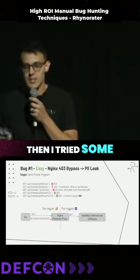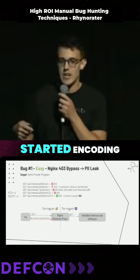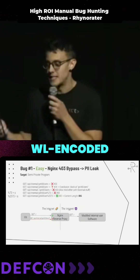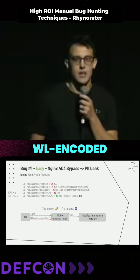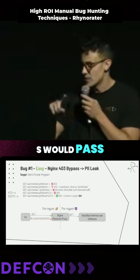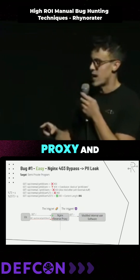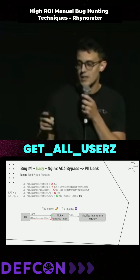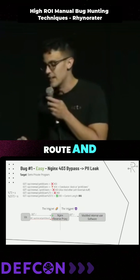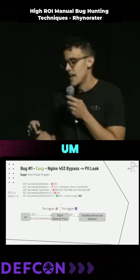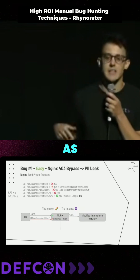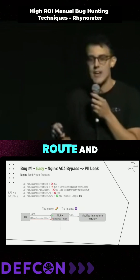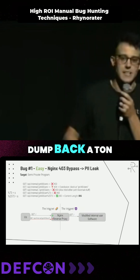So then I tried some path traversal stuff, and eventually I started encoding various characters and found out that a URL-encoded 'S' would pass through the reverse proxy and not be perceived as a match for the block on the get all users route. And it would be parsed on the back end as an 'S', so it would match that get all users route and dump back a ton of data.